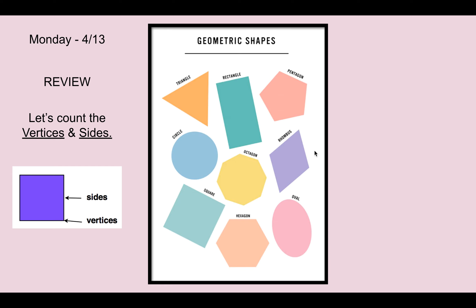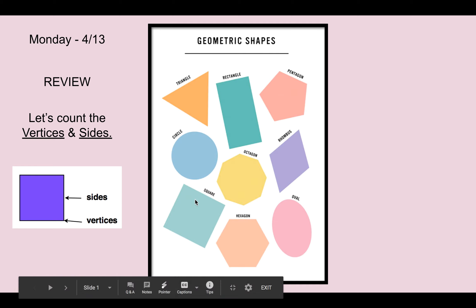Looking at our rhombus, we can count one, two, three, four vertices. Let's count the sides: one, two, three, four sides. And we did our square as part of the review here, so we know that there are four sides and four vertices.